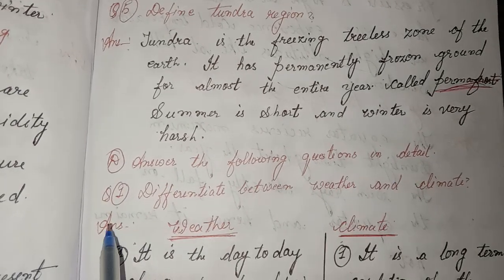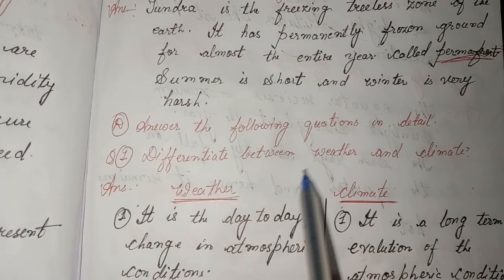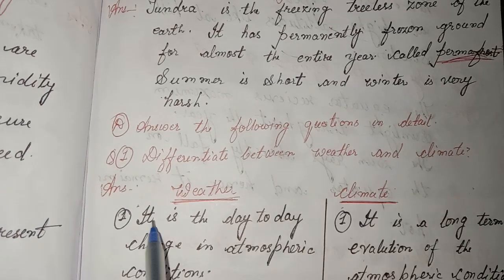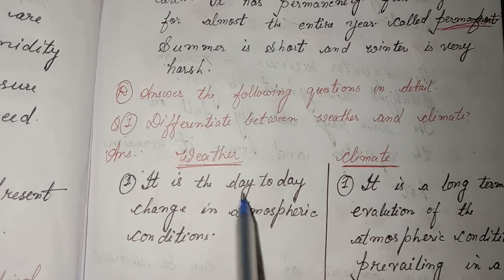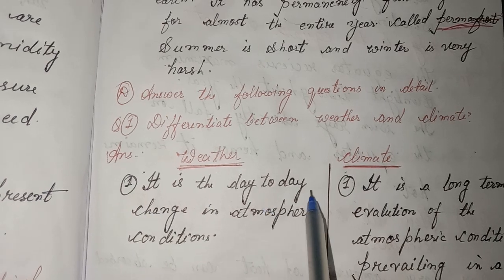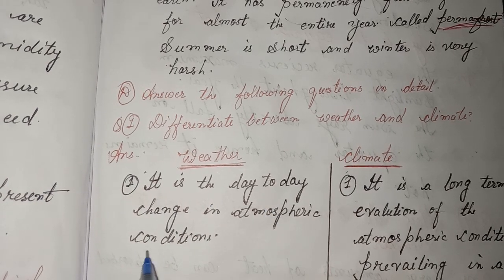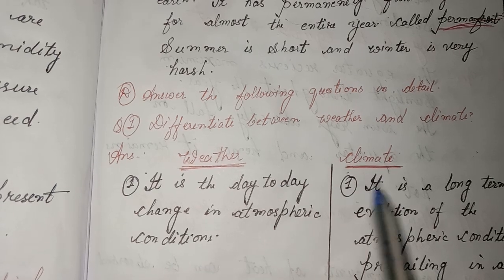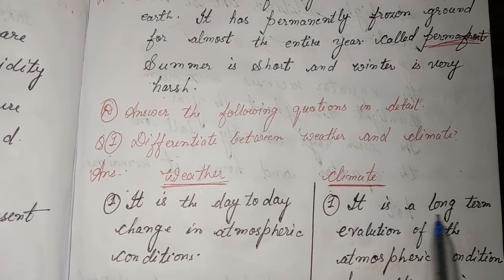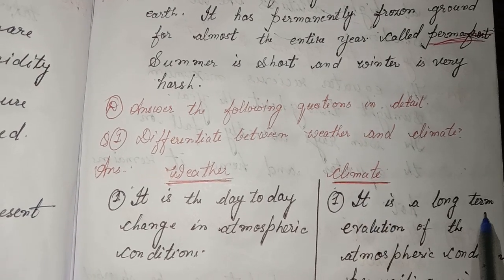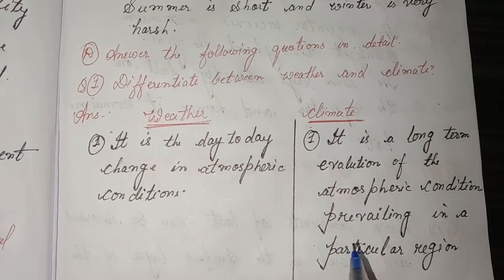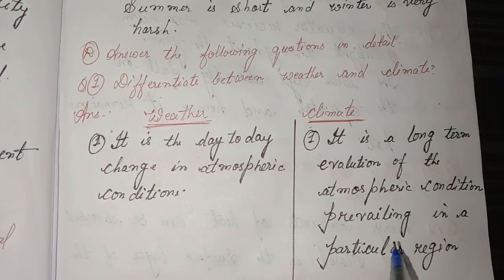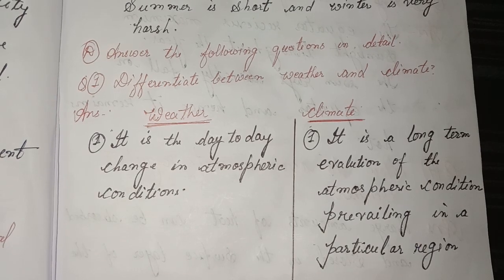Answer the following questions in detail. First, differentiate between weather and climate. Weather is the day-to-day change in atmospheric conditions. Climate is the long-term evolution of the atmospheric conditions prevailing in a particular region.